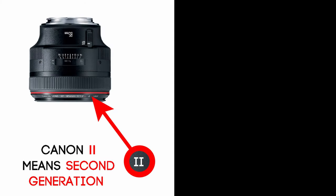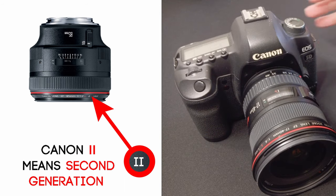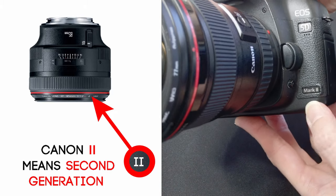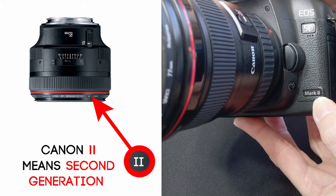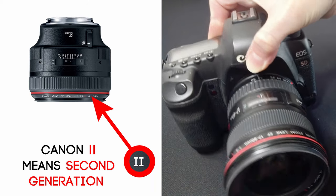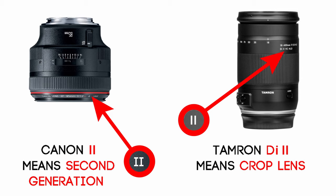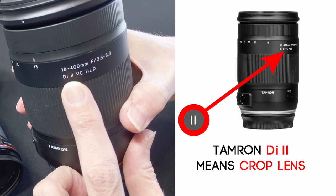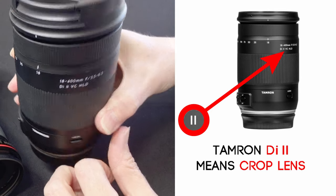Some lenses and camera bodies might also have Roman numerals like 2 and 3 to indicate the generation of the camera body or lens. A lens with a 3 is newer and probably has some upgrades compared to the same lens generation 2. However, be aware that some manufacturers may use similar markings for other purposes. Tamron lenses marked DI2 indicate that it's a crop sensor lens, and DI3 lenses are specifically for mirrorless.